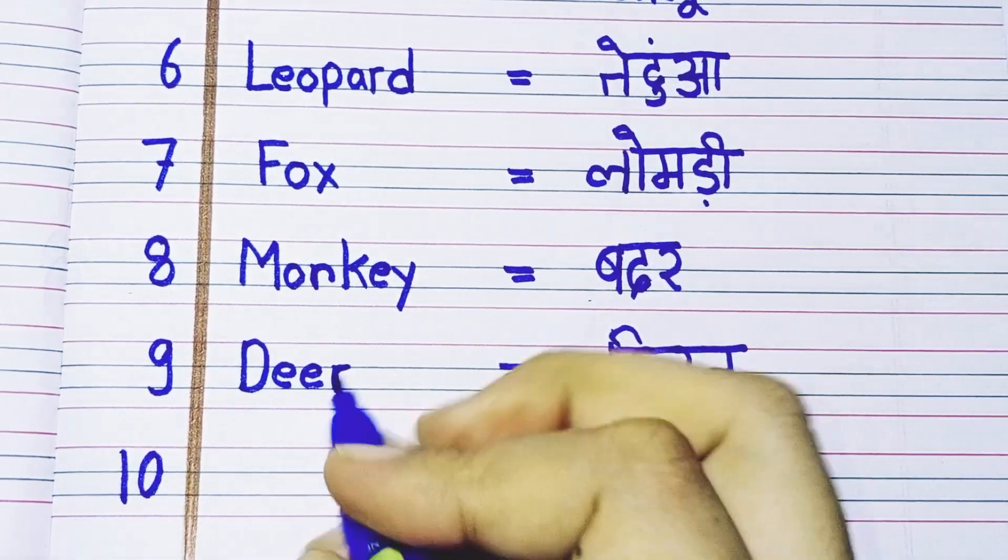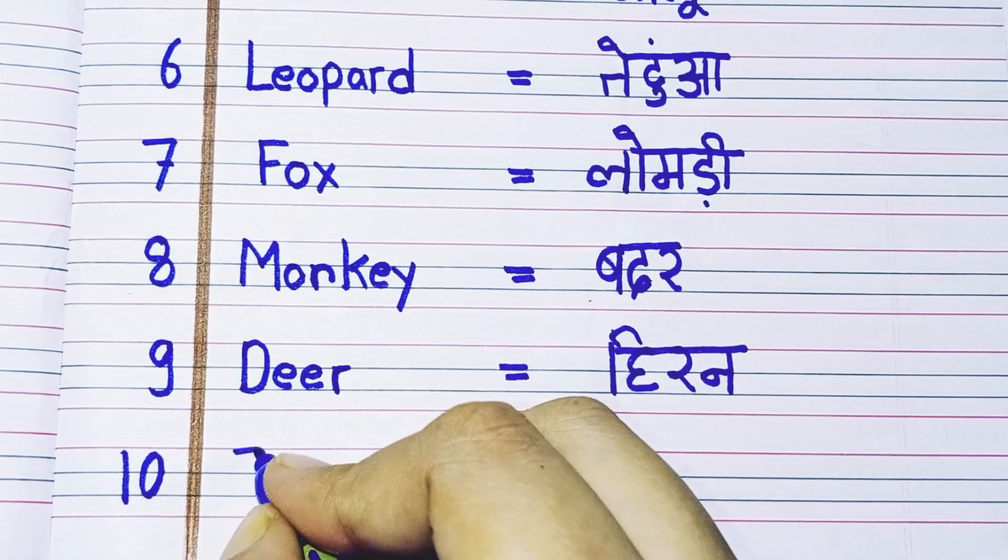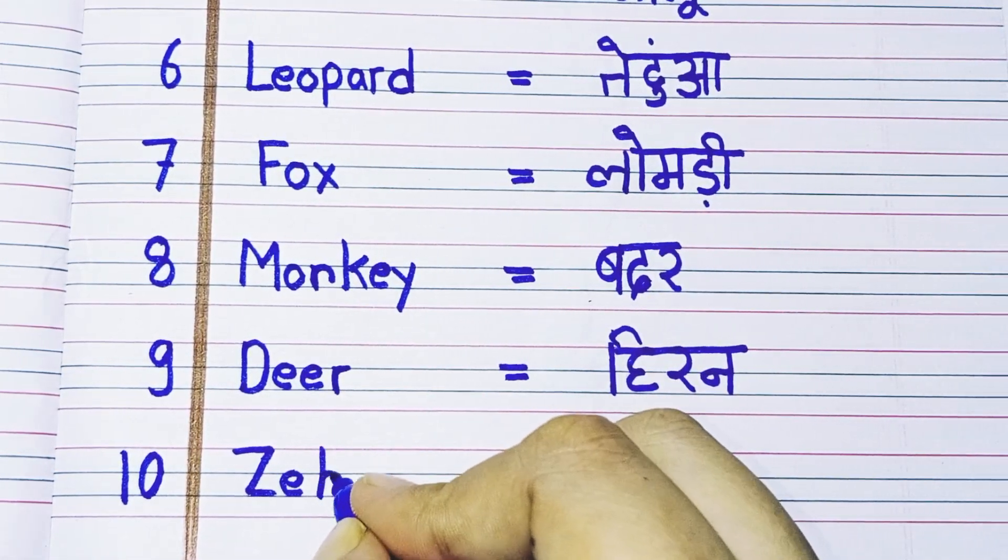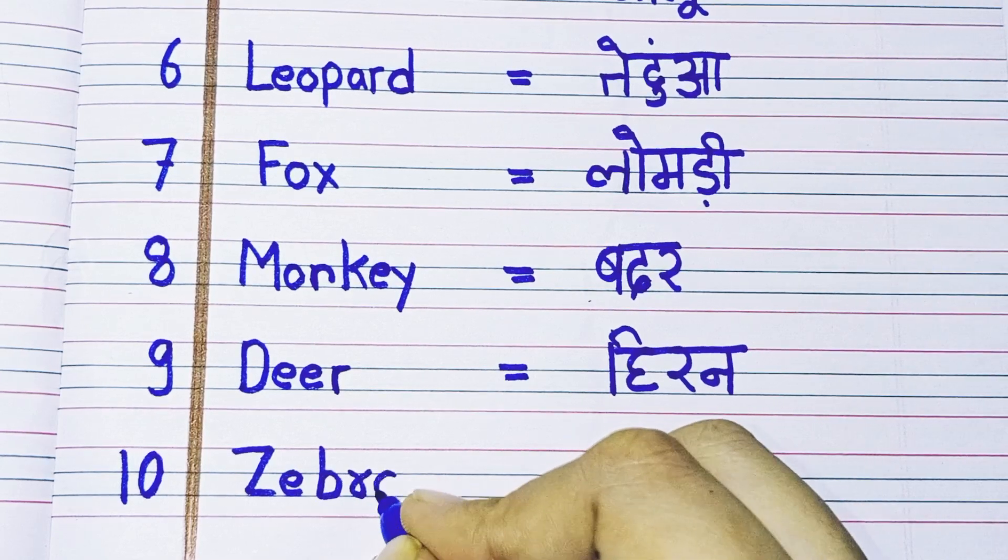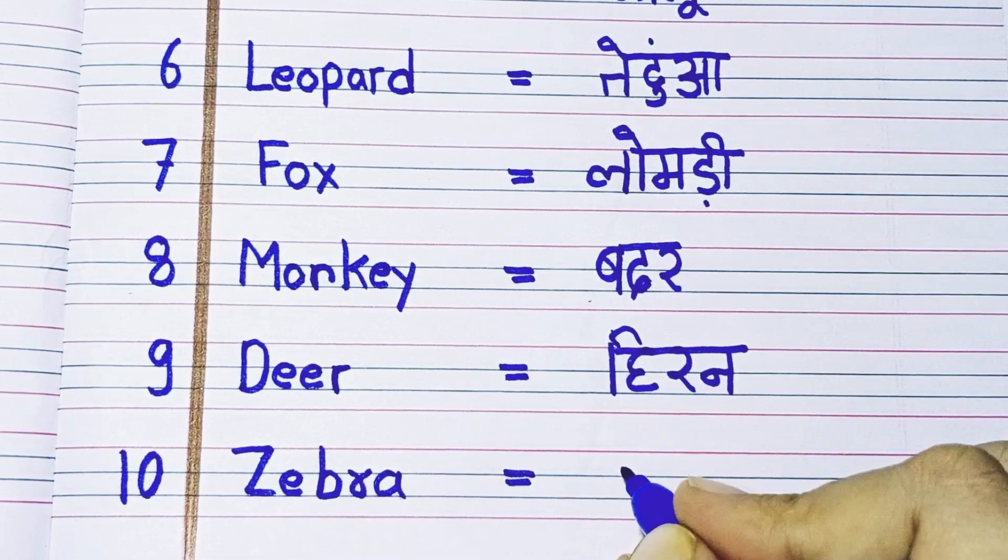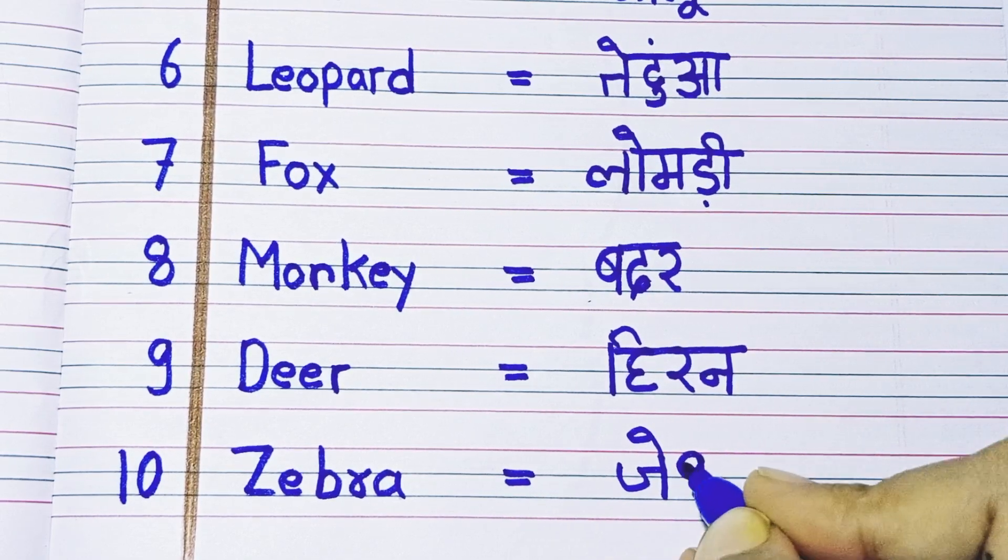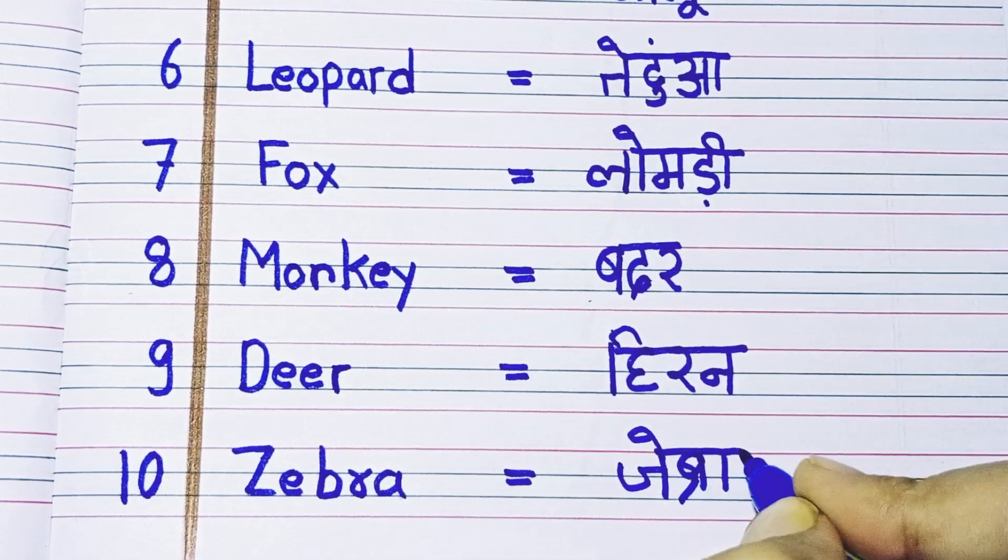Tenth number: Z-E-B-R-A, zebra. Zebra means zebra. Thank you.